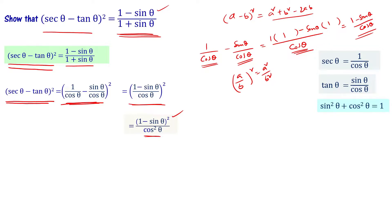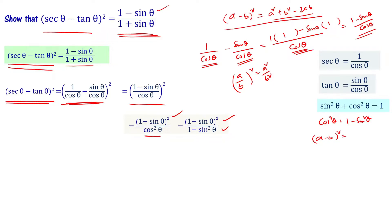Recalling the identity sin squared theta plus cos squared theta equals 1, we get cos squared theta equals 1 minus sin squared theta. So the expression becomes 1 minus sin theta whole square divided by 1 minus sin squared theta. The numerator is a minus b whole square, which can be written as a minus b into a minus b. The denominator 1 minus sin squared theta is of the form a squared minus b squared, so it factors as 1 minus sin theta into 1 plus sin theta.